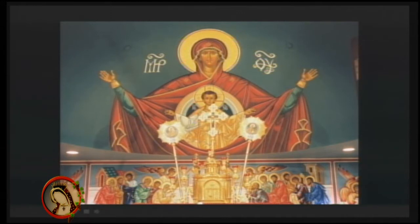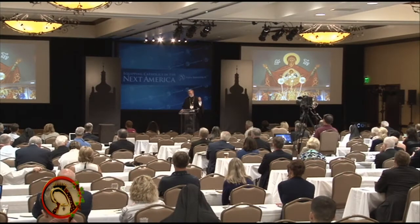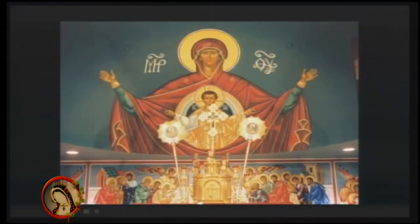The second most important icon in the Byzantine architectural structure would be behind the altar — the Platytera, called the virgin who is more spacious than the heavens. He who not even the universe could contain was contained within the womb of the virgin, making her more spacious than the heavens. She's depicted in red because red signifies her queenliness, her earthly connection from which Christ gets his human nature, and also her purity. She'll always be depicted with three stars, depicting that she was a virgin before, during, and after the birth of Christ. The abbreviations on either side read Mater Theo — Mother of God.